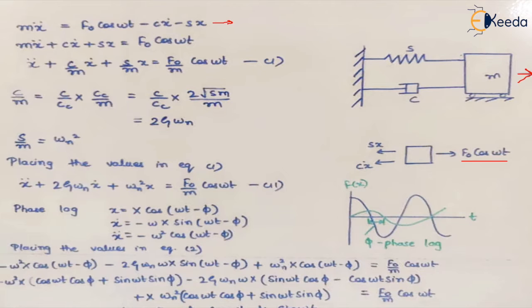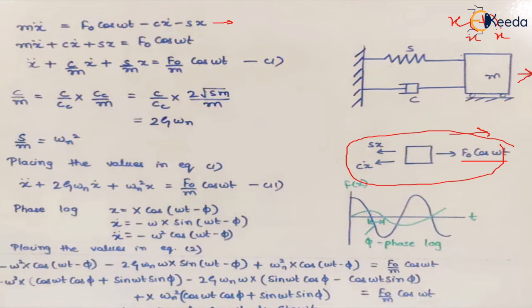If the displacement is x as a function of time, then velocity is ẋ and acceleration is ẍ. When the body moves in a given direction, the resultant of all three forces gives the equation: mẍ = F₀cos(ωt) − cẋ − sx. Taking all terms to one side, this is the equation of motion we get.